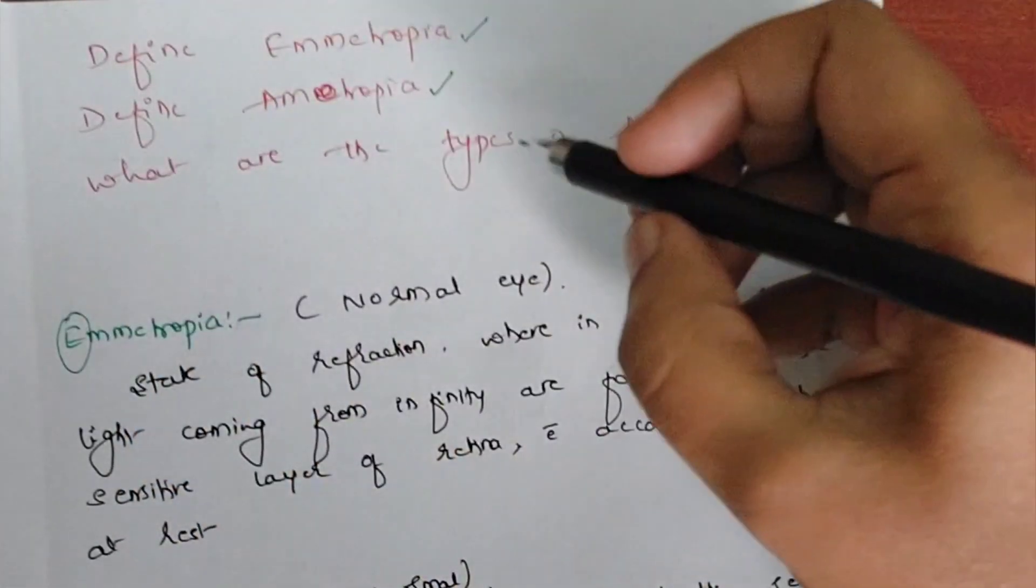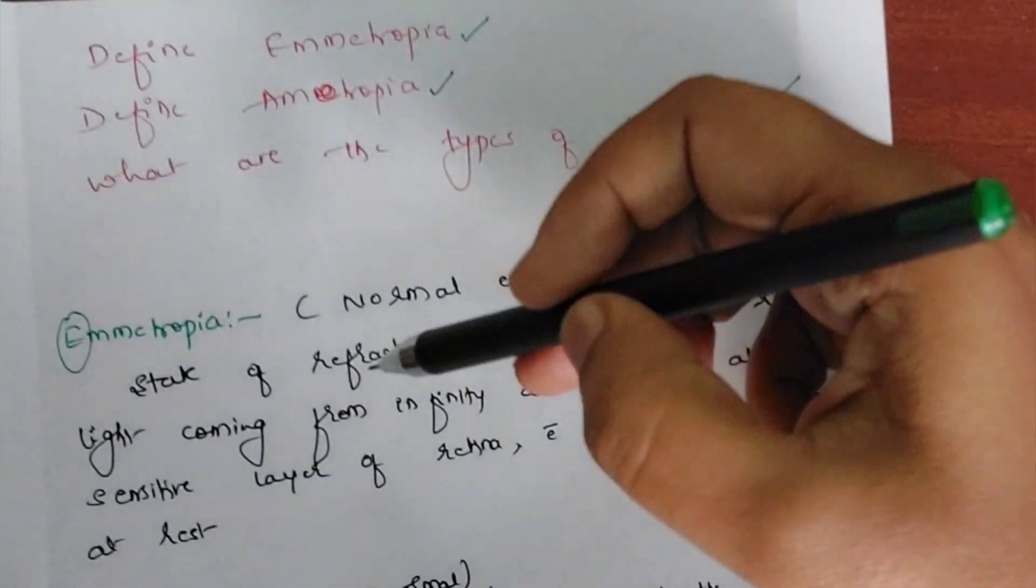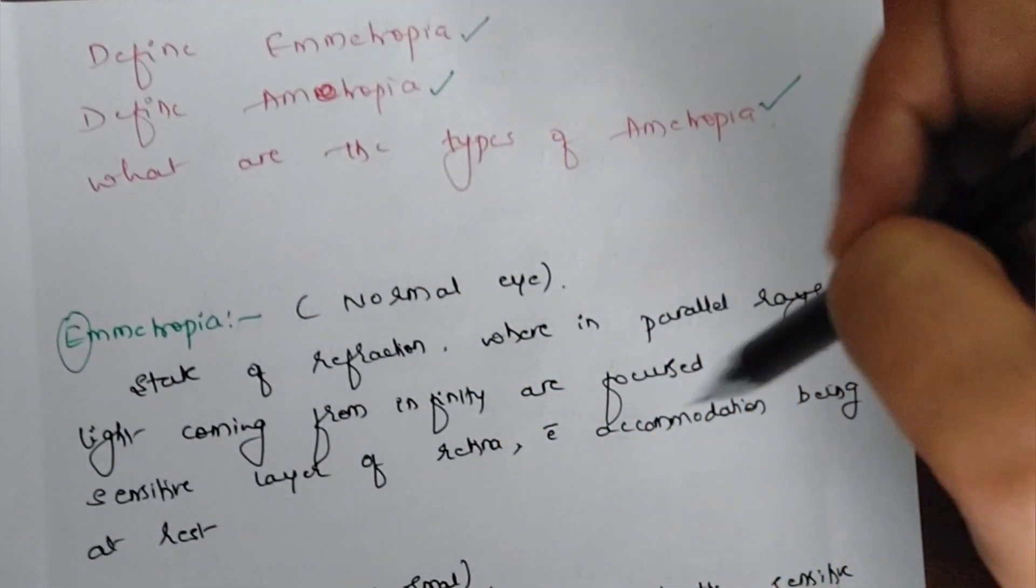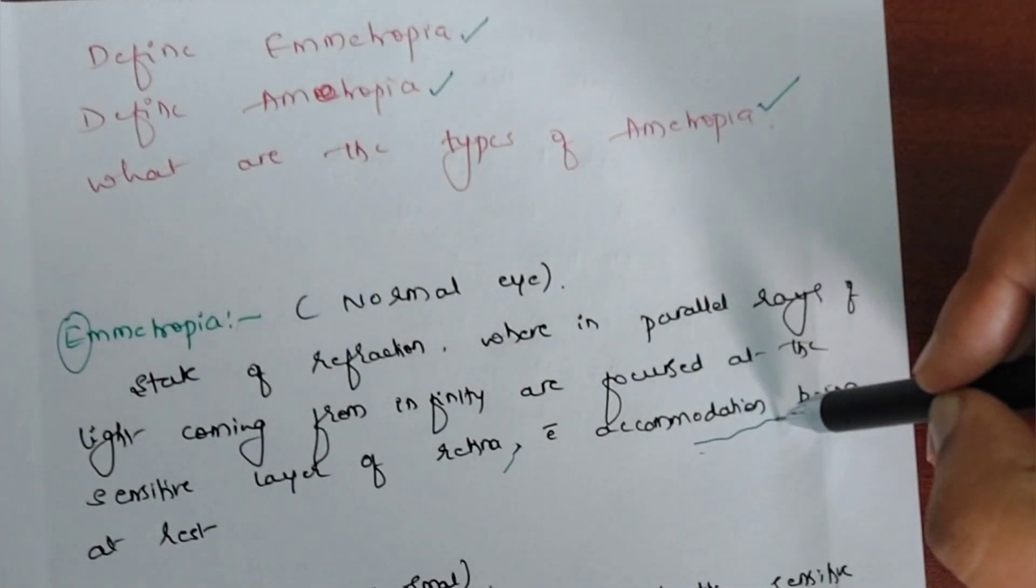Emmetropia, as it suggests, E is normal light. It is a state of refraction wherein parallel rays of light coming from infinity are focused at the sensitive layer of retina with accommodation being at rest.